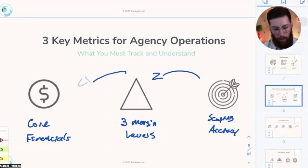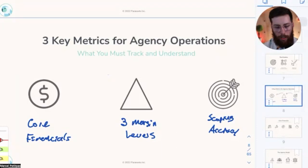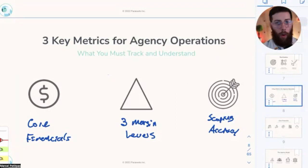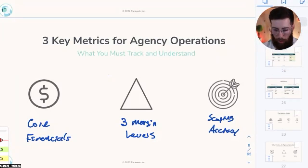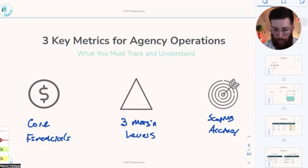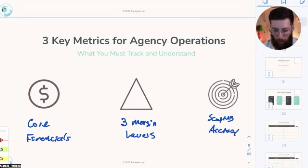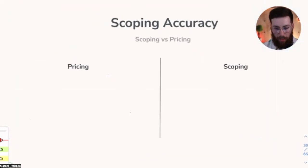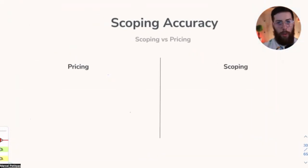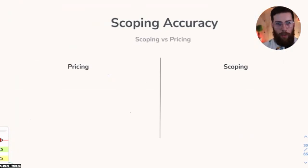Today in our last part, we're going to talk about how to think about pricing and scoping, why those things are different, and how to identify the right pricing model for your business. The first thing to address is pricing versus scoping — are they the same thing? Pricing and scoping get conflated as being one exercise, and it's very important to separate them because they're related but not the same.